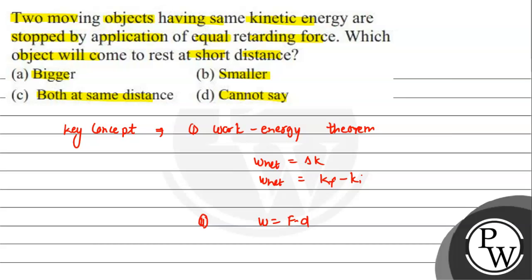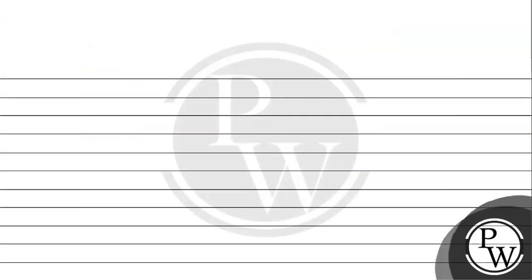Okay, now both objects' kinetic energy are same and force applied is same. If you look at it, we will match the same. So it will be W equals F dot D equals delta K. So D will be delta K upon F.